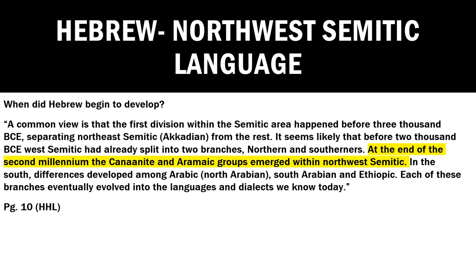The common view is that the first division within the Semitic area happened before 3000 BCE, separating Northeast Semitic — Akkadian — from the rest. Before 2000 BCE, West Semitic had already split into northern and southern branches. At the end of the second millennium, the Canaanite and Aramaic groups emerged within Northwest Semitic. In the south, differences developed among Arabic, North Arabian, South Arabian, and Ethiopic — each eventually evolving into the languages and dialects we know today.